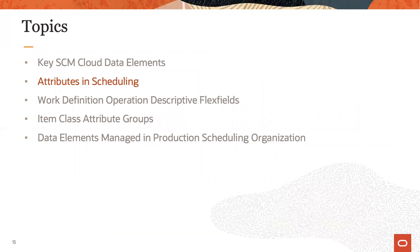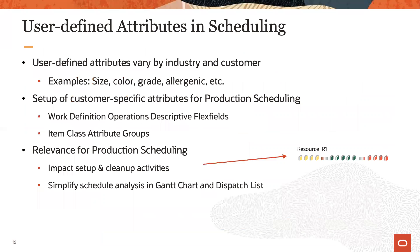Now let's review the role that user defined attributes play in scheduling. User defined attributes vary by industry vertical, individual customer, and even specific facility within a customer. For example, in food and beverages different attributes are relevant than in metals fabrication and processing. The attribute definition and maintenance uses descriptive flex fields for work definition operations and extensible flex fields for items. For production scheduling, these attributes serve two purposes: they are used to define changeover rules and user defined sequences, which drive sequencing decisions during schedule calculation and ensure that resource capacity is consumed correctly, and they support schedule analysis in the available schedule view.